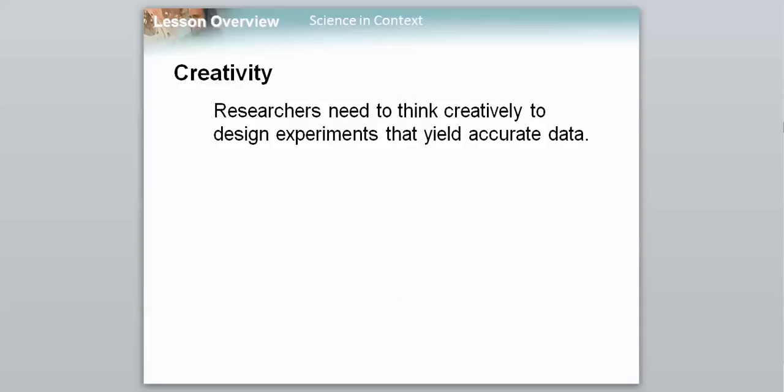And creativity, this might not be one that you think of. So researchers need to think creatively to design experiments that yield accurate data. Sometimes things can get really complex when you want to figure out what's going on. It might not be so cut and dry, a black and white answer. So if you want to be an effective researcher, an effective scientist, you need to be creative. So those are the four attitudes that focus around the scientific methodology, around those steps that we went over in previous videos.